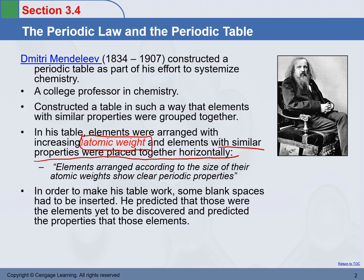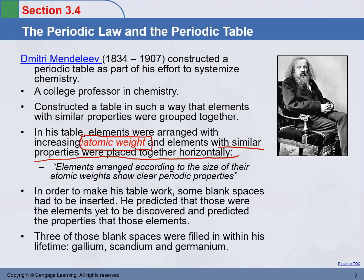However, in order to make his table work, he had to leave quite a few blank spaces. He predicted that the reason for those blank spaces was not because the table was wrong, but because some elements were yet to be discovered. And in his lifetime, three of those blank spaces were actually filled — they were gallium, scandium, and germanium.